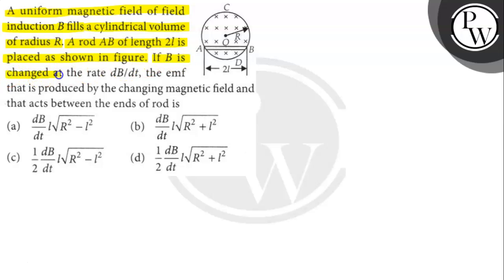If B is changed at the rate of dB/dt, the EMF that is produced by the changing magnetic field and that acts between the ends of the rod is what? Let's find out.